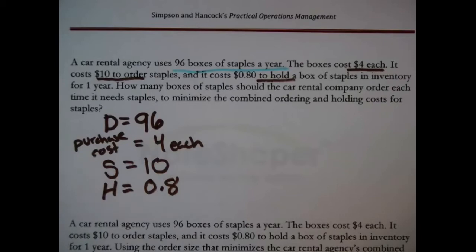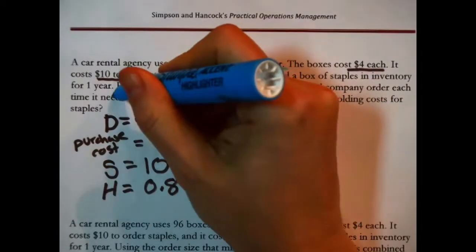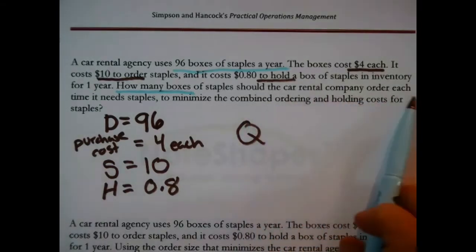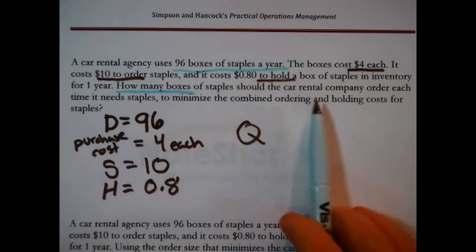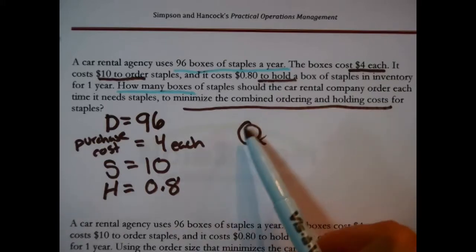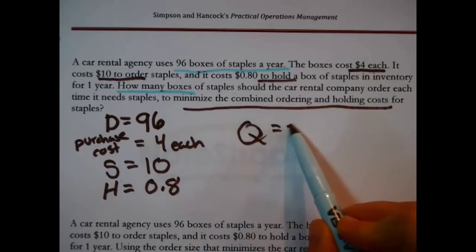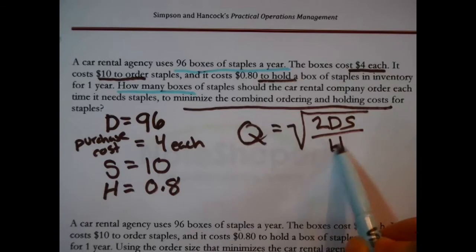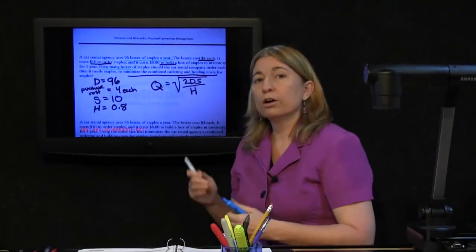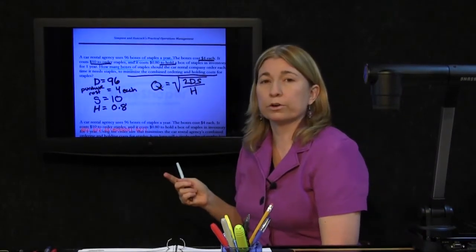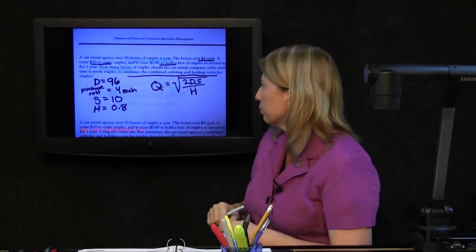But what is the question? How many boxes should the car rental company order each time it needs staples to minimize the combined ordering and holding costs? So they don't need just any Q, they need the EOQ: 2 times D times S divided by H. They need the formula for the one order size that by definition minimizes the combined ordering and holding costs.